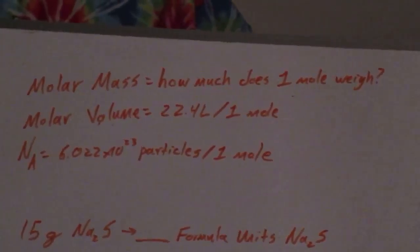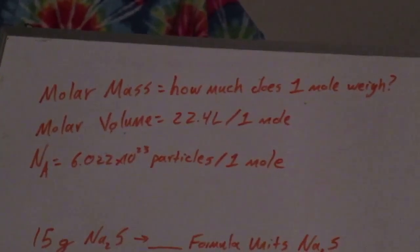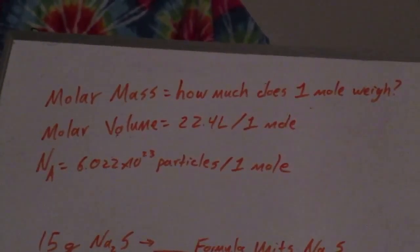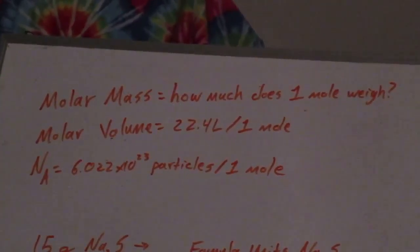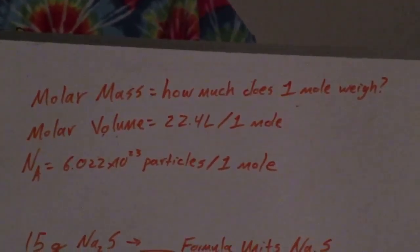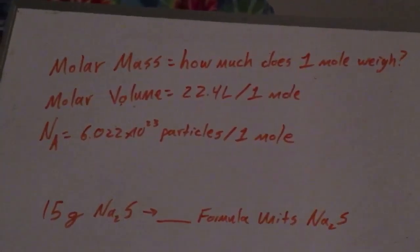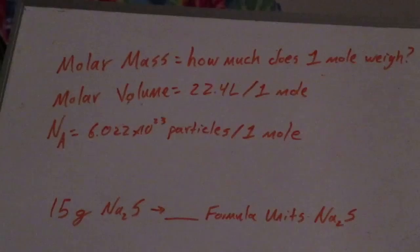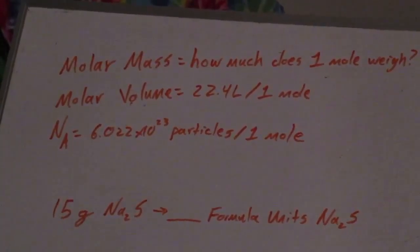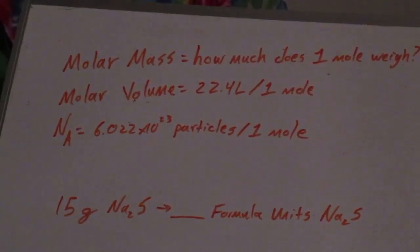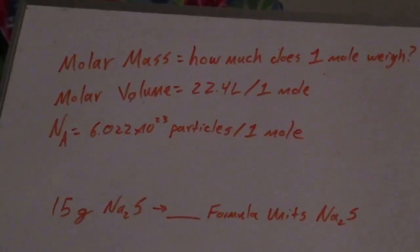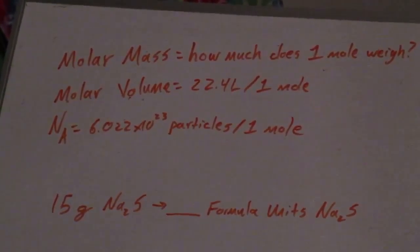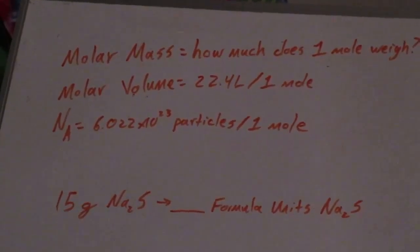Molar mass is how much does one mole of some substance weigh. I've said molar volume a few times in class — the molar volume is just 22.4 liters. N sub A is Avogadro's number, which is 6.022 times 10 to the 23rd particles in one mole. It's always that many particles in one mole — it doesn't matter what it is. It could be nitrogen, salt, sugar, methane, aluminum sulfate, ammonia. It's always going to be 6.022 times 10 to the 23rd particles.